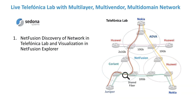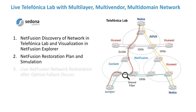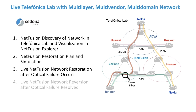The first section shows the visualization of the Telefonica lab discovered by the NetFusion discovery platform. The second part demonstrates the simulation of a fiber cut and use of the NetFusion restoration app to understand and analyze the network state during the restoration process. Next, we demonstrate an actual optical failure in the Telefonica lab and show the establishment of new optical connections taking different paths to restore IP MPLS traffic.